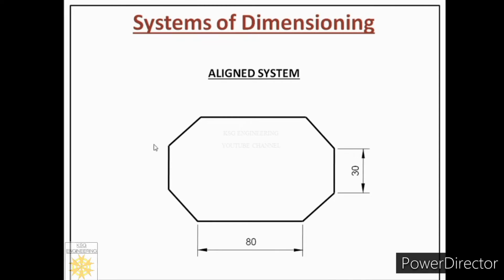Next, we learn about inclined dimensions. For inclined dimensions, we first draw extension lines. An important point: extension lines must be perpendicular to the object lines — always at 90 degrees to the object line. After that, we draw the dimension line, which must be parallel to the object line. Everywhere you can see the dimension line is always parallel to the object line.